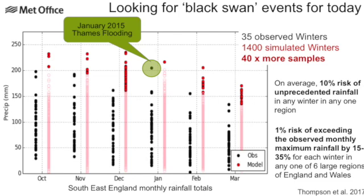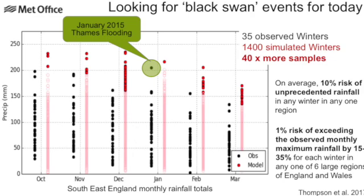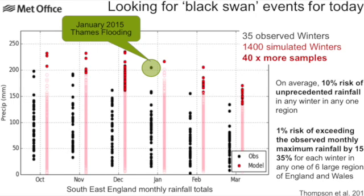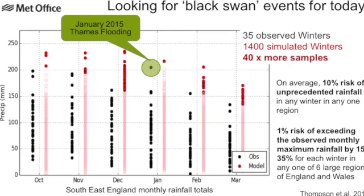The observations are quite widely spread each month — we have a very variable climate — with some extreme rainfall amounts, including the Thames flooding in Southeast England, showing how much of an outlier that event was.